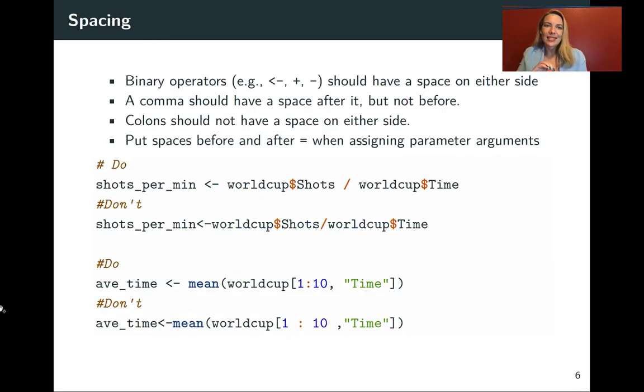The next code style point is on spacing when you use binary operators you should have a space on each side. So just as a reminder binary operators are these special types of functions that instead of having the function name and then parentheses and the arguments inside those parentheses instead of that you only have two arguments and the function actually goes in between the two and these are really useful when you're doing things like assignment with the assignment arrow or the plus sign or a negative sign for subtraction or even the pipe symbol.